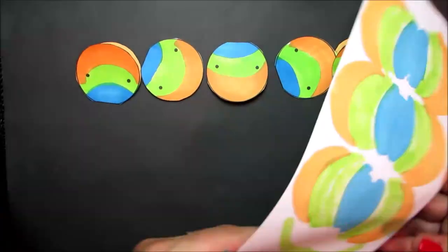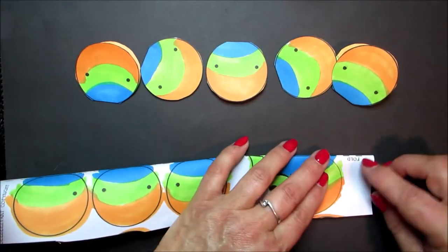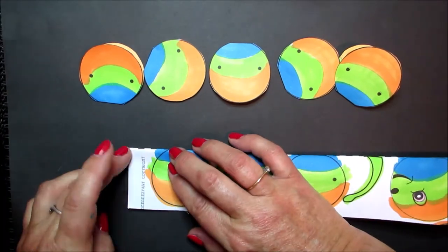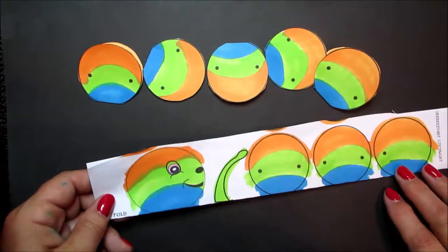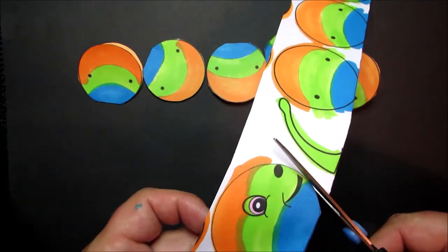And then when you've completed that fold along the bottom fold line. And then cut around the shapes like before.